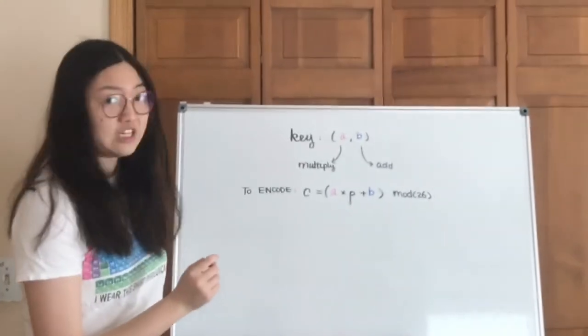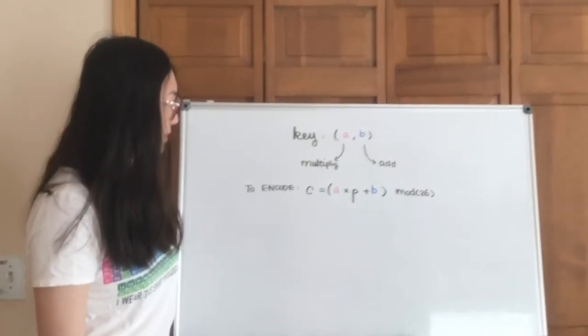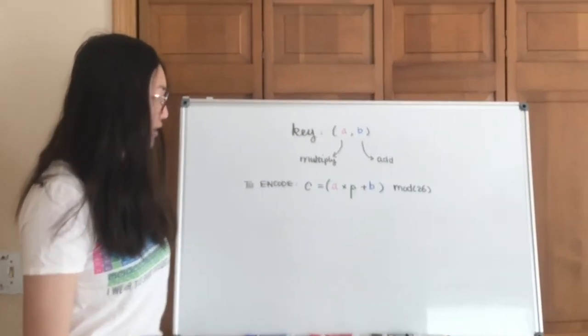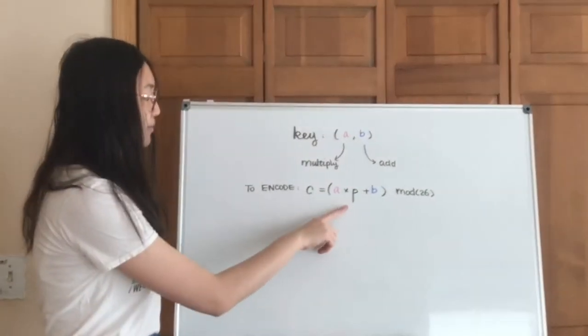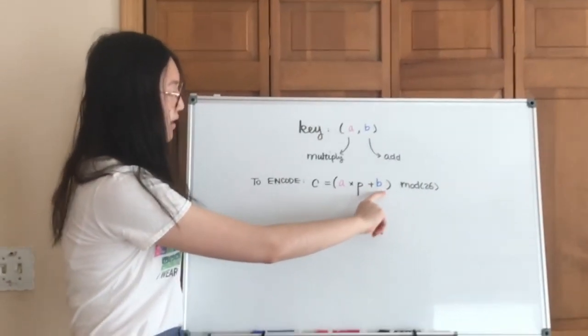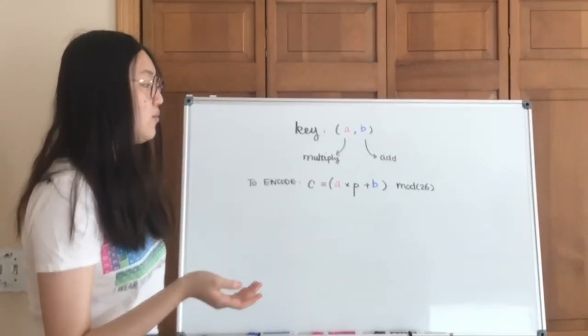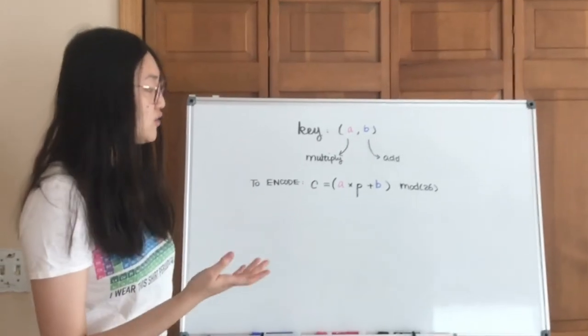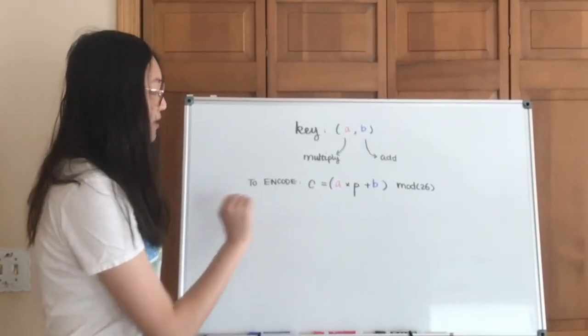For each problem you are usually going to be given a key in the form of a comma b, and then to encode whatever regular text you have, you're going to multiply your plaintext number by a, and then add it by b, and then you take this probably pretty big number and you take the mod 26 form of it. And whatever the outcome is, it's going to be your ciphertext.